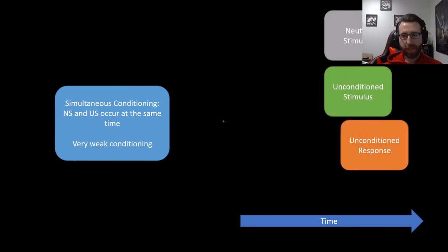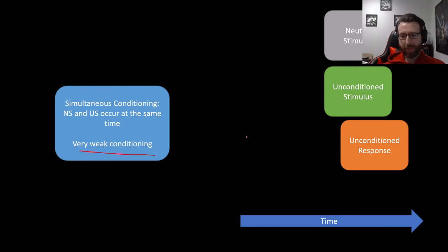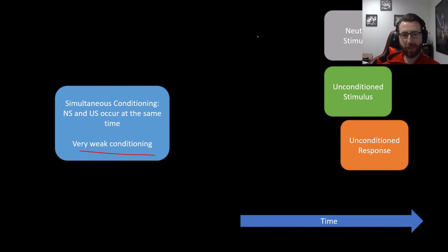Next up is simultaneous conditioning, in which the neutral stimulus and unconditioned stimulus occur at the same time. It might surprise you to learn that this results in actually very weak conditioning. This is mostly because there's not a chance for the neutral stimulus to have a lot of predictive value. The real value in respondent conditioning is learning that the conditioned stimulus is a predictor of the unconditioned stimulus, and something is not very useful as a predictor if it just happens at the exact same time.